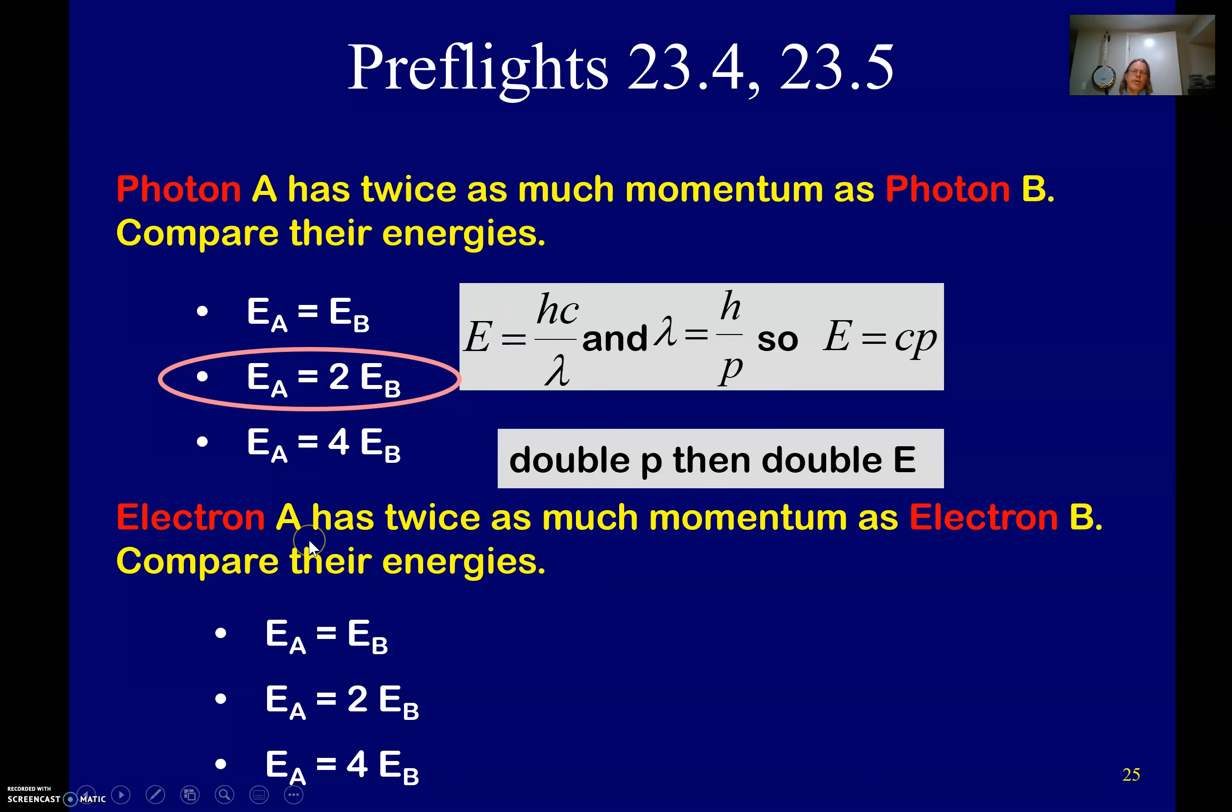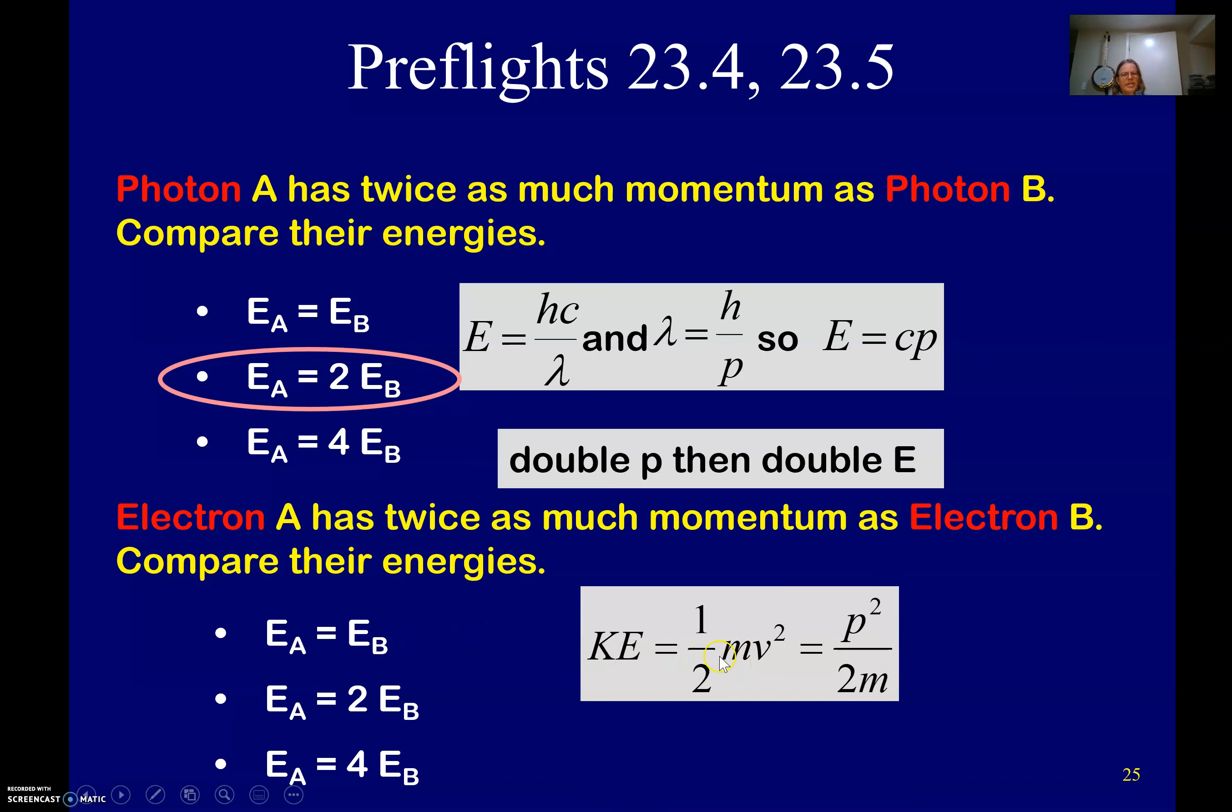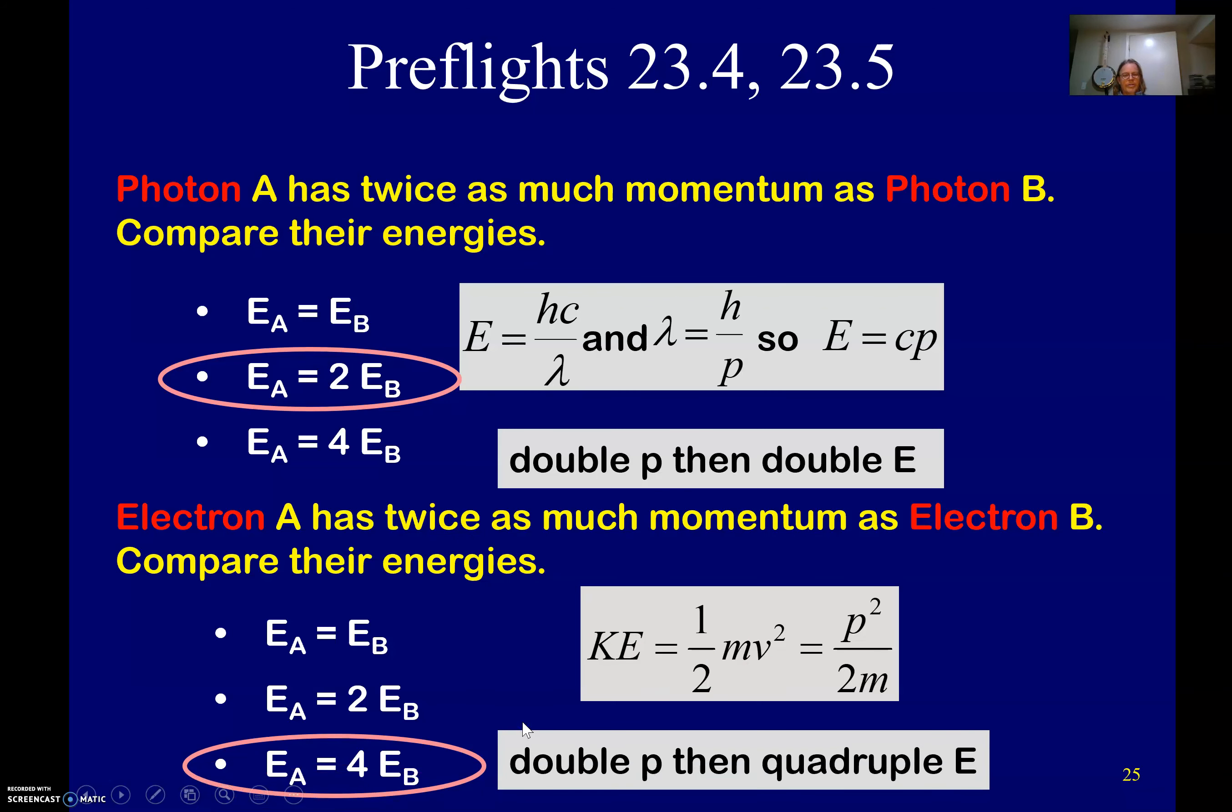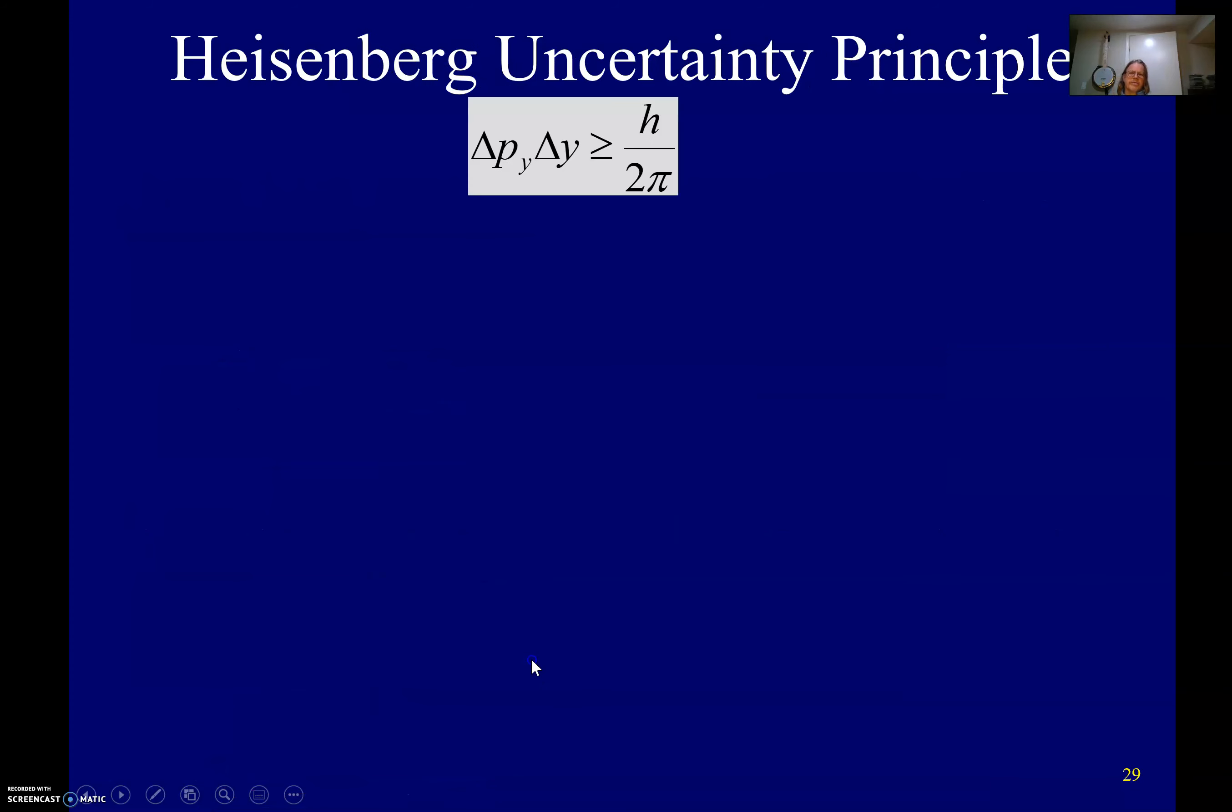But when we talk about a particle, well, not that a photon can't be a particle, but now that we're talking about the one-half mv squared, if it has twice the momentum, it's actually going to mean that it actually has four times the energy in reality. All right. We've got a lot of stuff, other things to do.